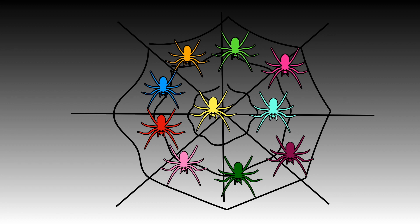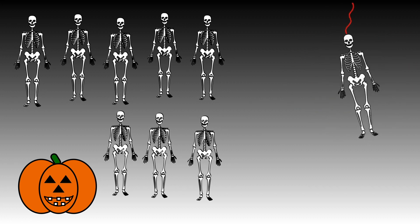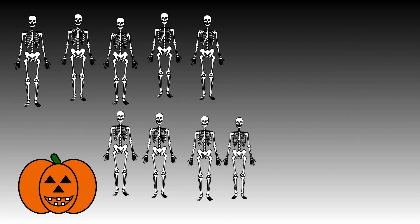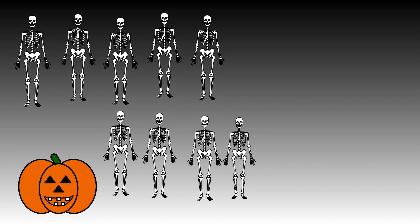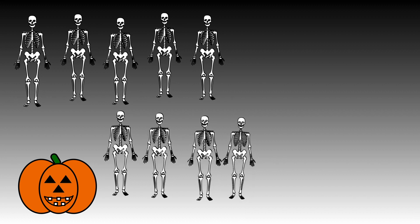There are eight skeletons at a party. One more skeleton arrives. How many skeletons are now at the party? One, two, three, four, five, six, seven, eight, nine. There are now nine skeletons at the party. Eight and one more is equal to nine.